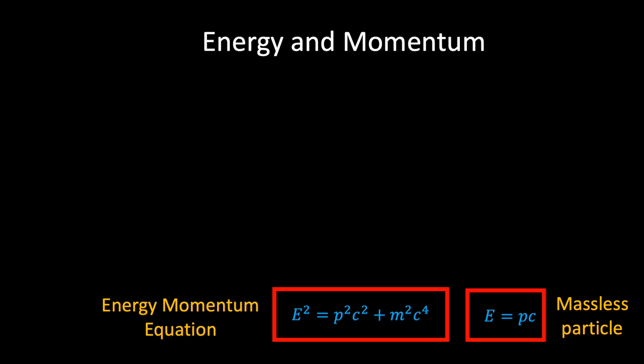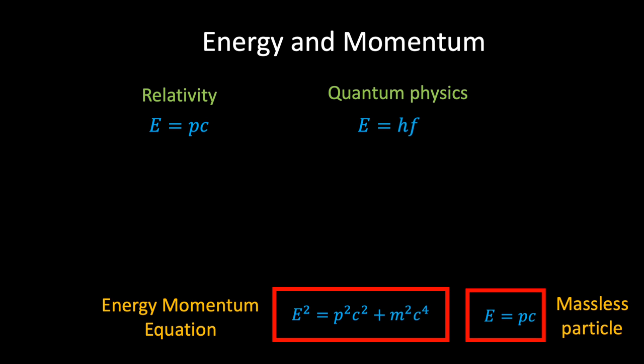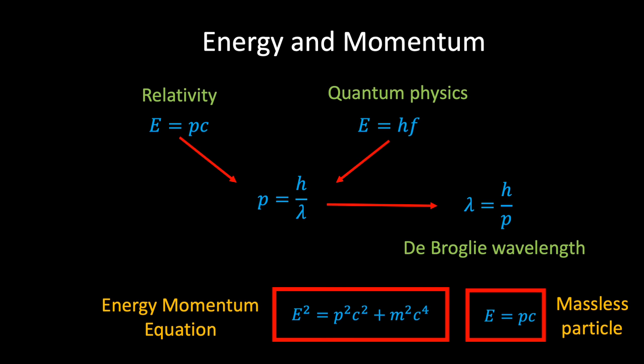As an interesting side note, if we combine the relativistic expression for the energy of a massless particle with Einstein's famous equation for the energy of a photon — as proposed to explain the photoelectric effect — then the momentum of a massless photon can be expressed as Planck's constant divided by the wavelength λ. It's fascinating that in 1923 it was this equation that Louis de Broglie suggested should apply to all matter particles, which then inspired Schrödinger to develop his famous quantum mechanical wave equation.